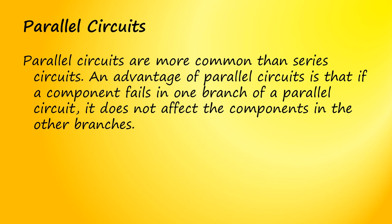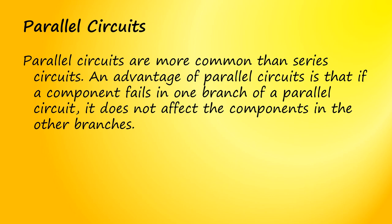Parallel circuits are more common than series circuits. An advantage of parallel circuits is that if a component fails in one branch, it does not affect the components in the other branches. Think of a string of Christmas tree lights — if wired in series, if one light goes out they all go out; if wired in parallel, the other bulbs are not affected. The navigation lights in an aircraft are one example: if one navigation light bulb burns out, the others will continue to work. The total power of a circuit is equal to the product of the total voltage and the total amperes in the circuit.